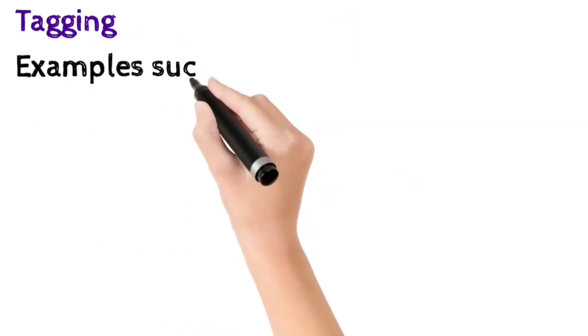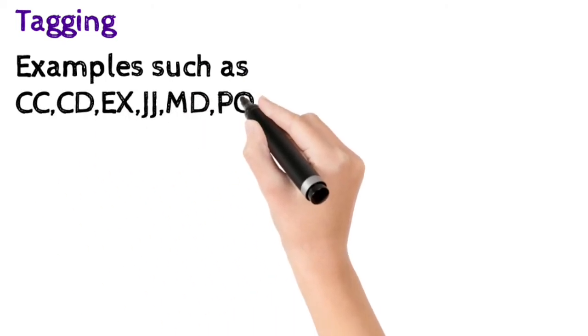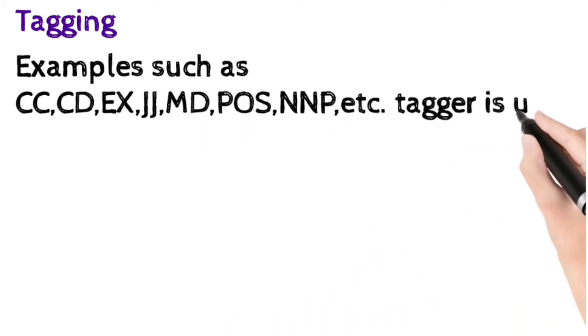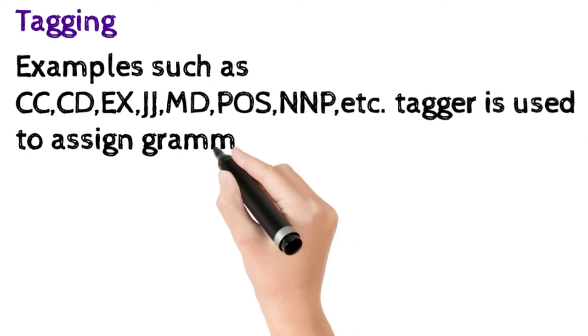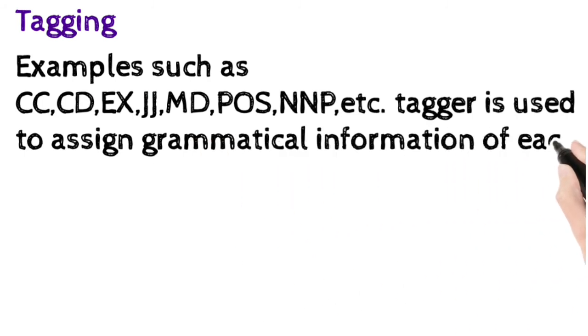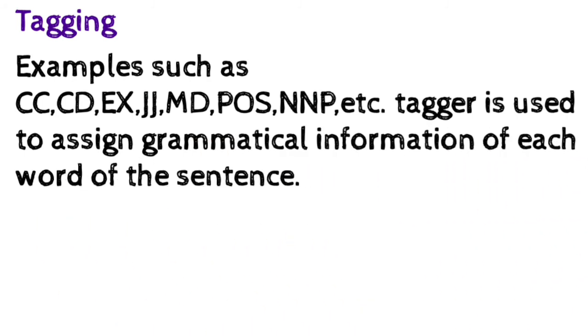Now the next one is tagging. Tagging may examples hote hai jase ki CC, CD, EX, JJ, MD, POS, NNP, etc. These are the taggers used to assign grammatical information of each word of the sentence. POS is something like part of speech. Toh asi sari chizhe samajne ke liye machine tagging use kahta hai.